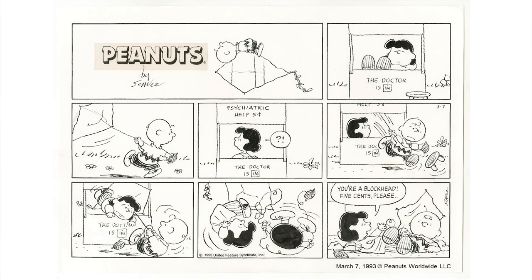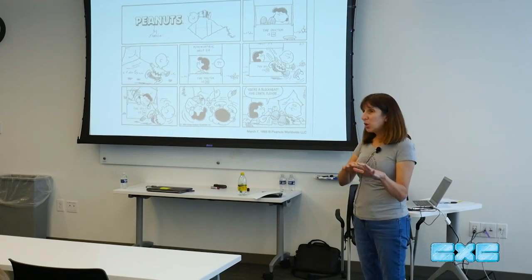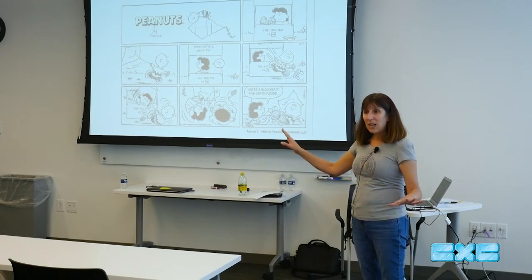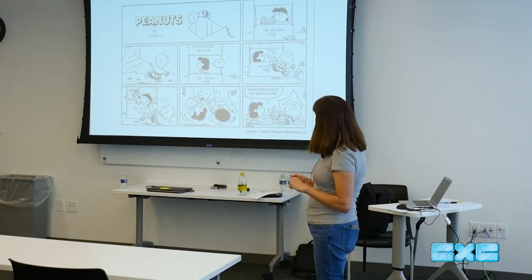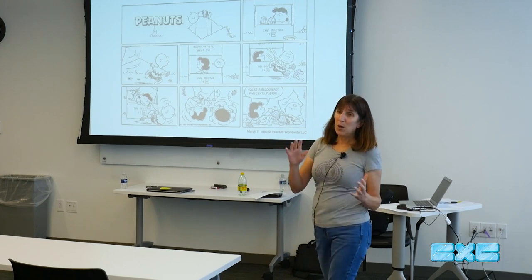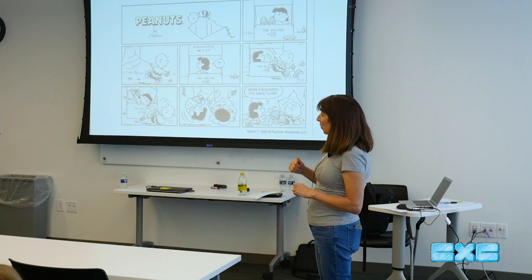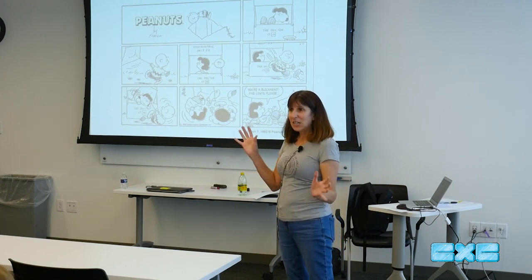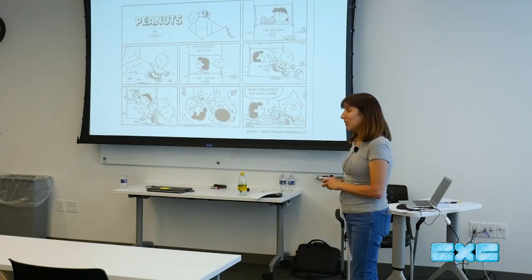Here's Snoopy, and he flies around on his doghouse, which some people may have seen before. Here's Linus, who carries around a blanket everywhere he goes. And Charles Schultz actually was known for getting the term security blanket added into the dictionary. Does anyone have a lovey that you carried around when you were little, or that you still carry around? So that's just what Linus did.